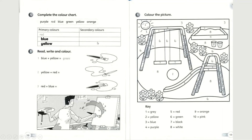Let's look at the first secondary color — it's purple. After purple, we can have green or orange. The order of your answers does not matter; you can have them switched. As long as the three colors — purple, green, and orange — are correctly placed under secondary colors.